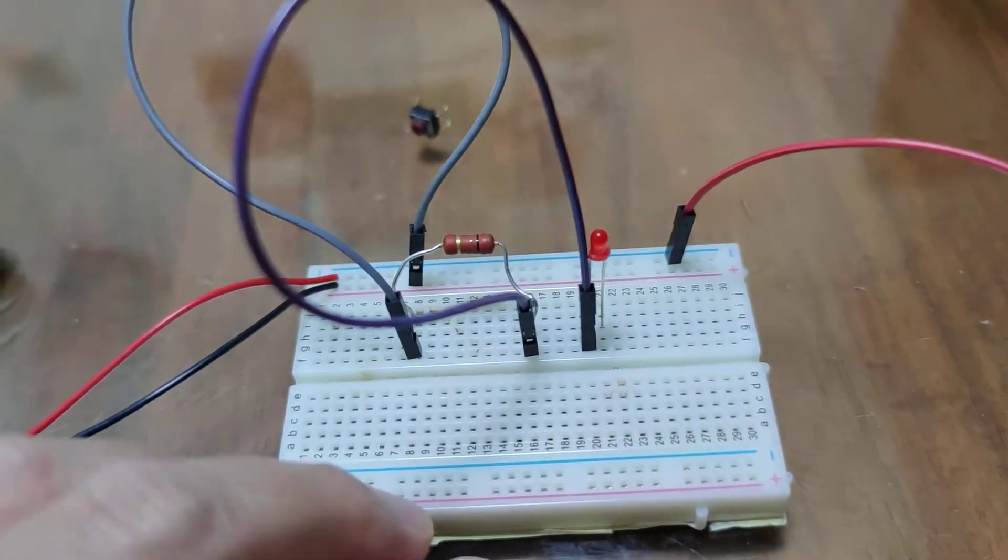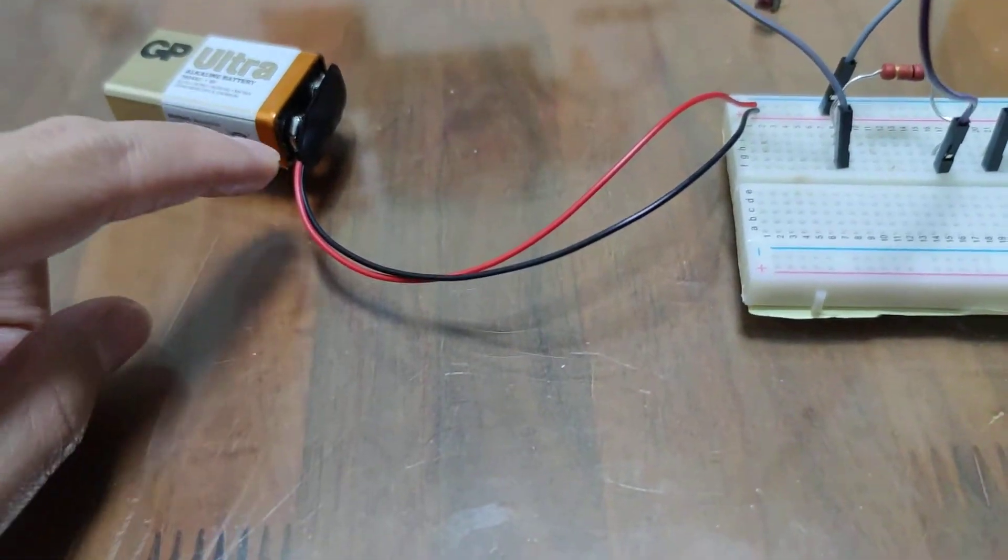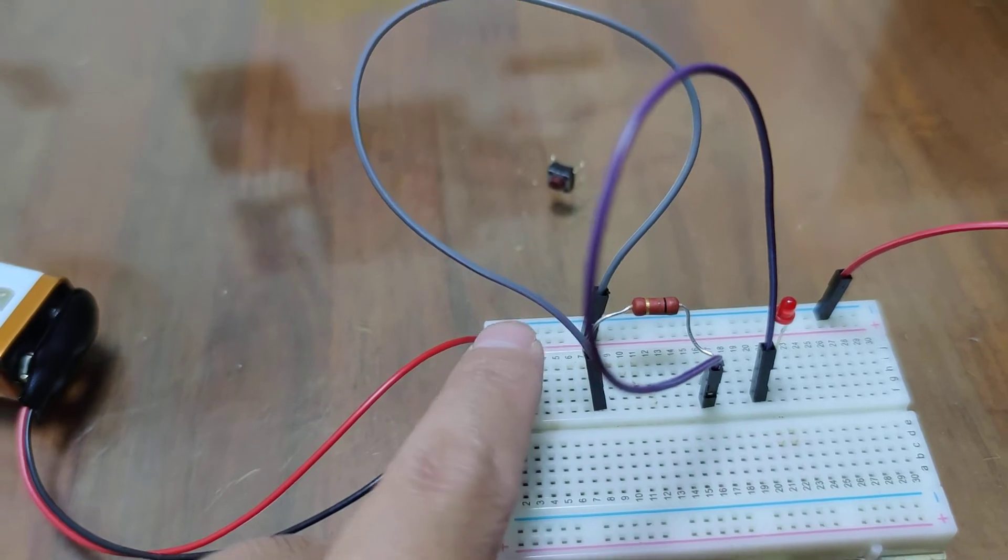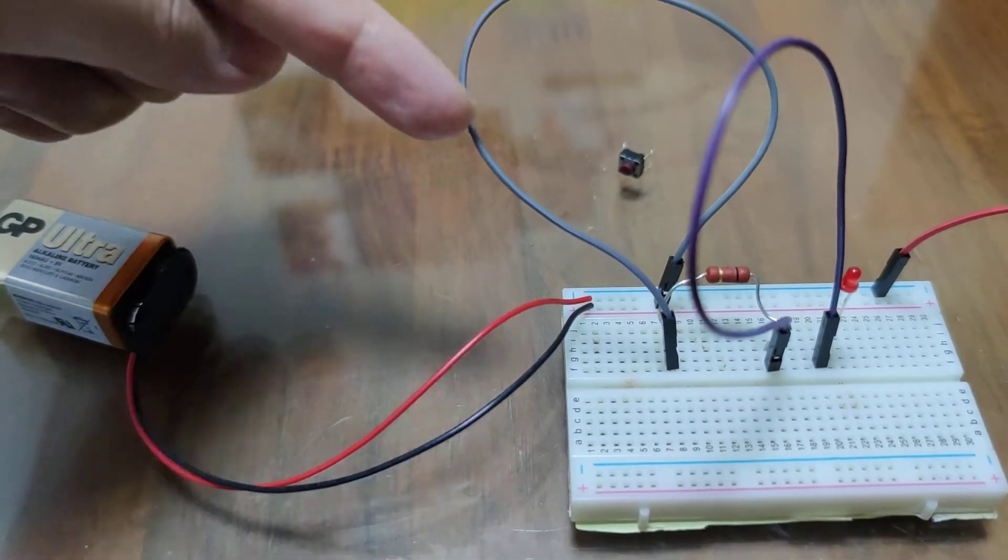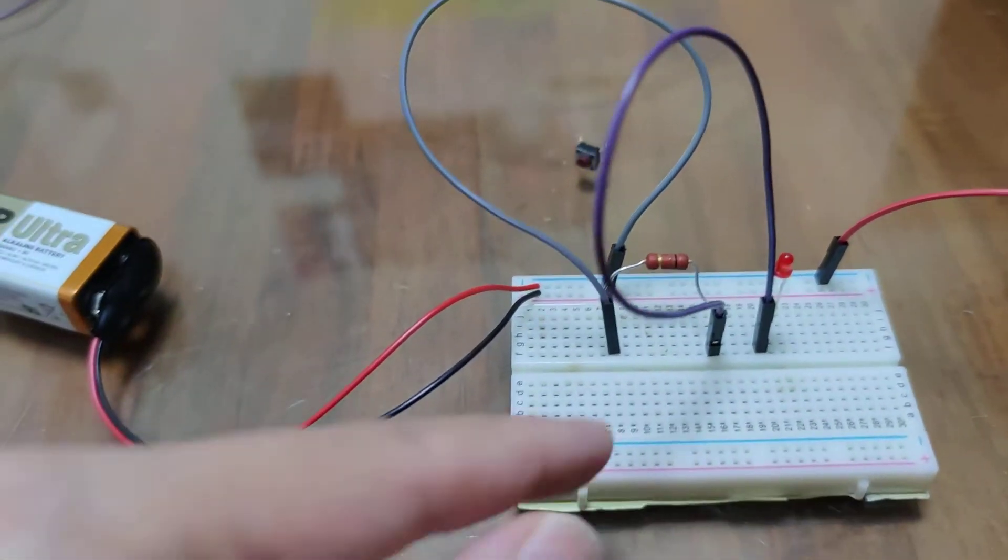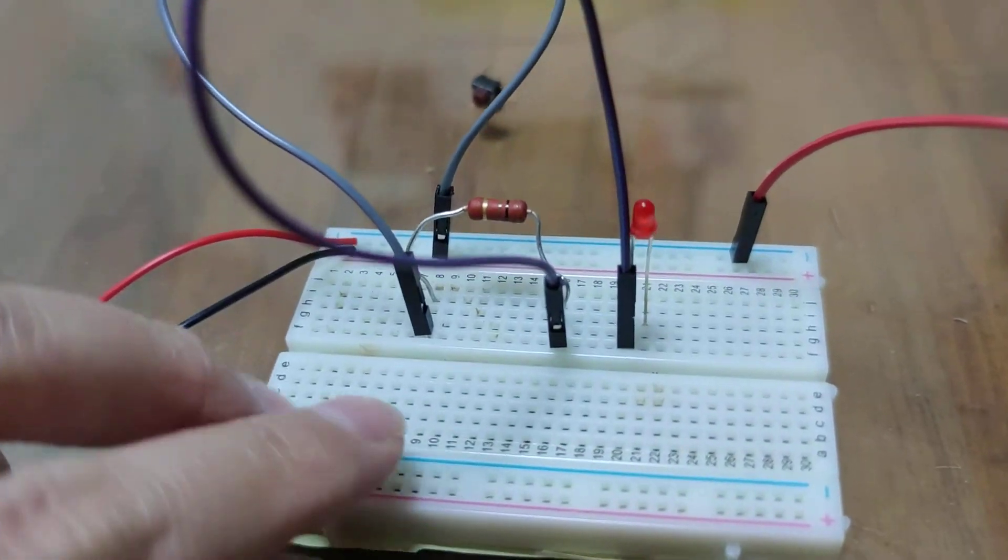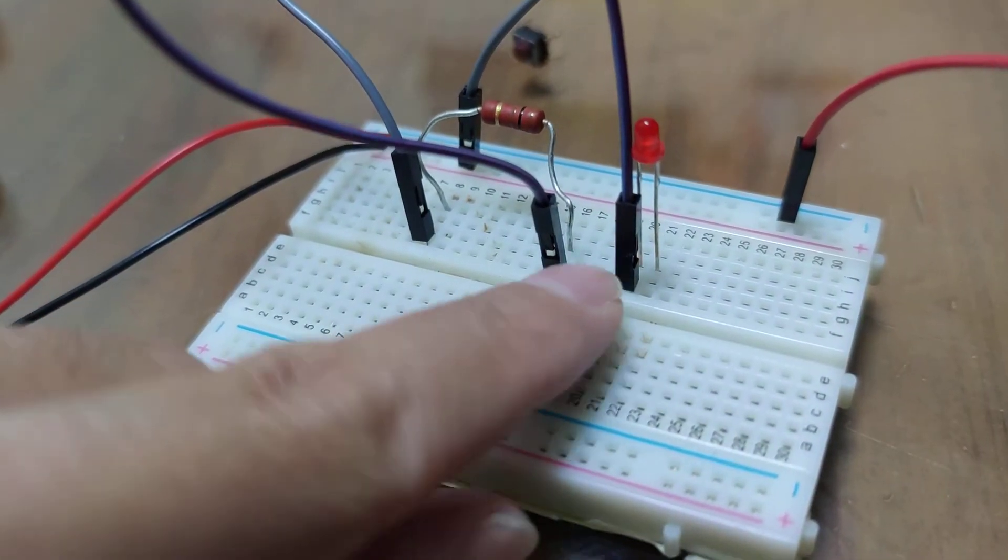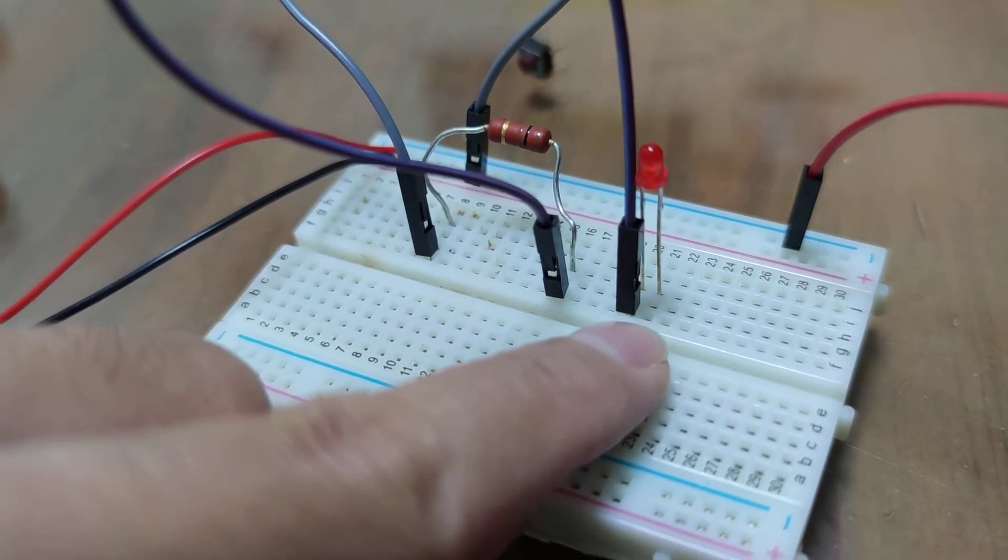So what we're going to do now is let's follow our electricity. Electricity is coming from the black wire, it's now going to this gray wire here, going through the resistor. From the resistor, it's going through the purple wire to the shorter leg of this LED, line number 20. And then it's going to follow through to the longer leg that we had in 21.